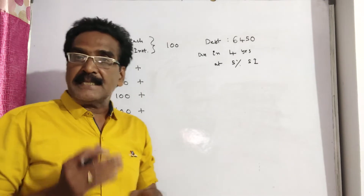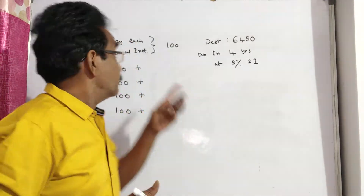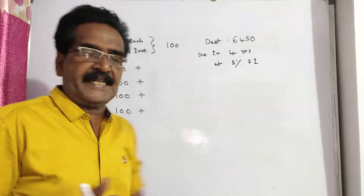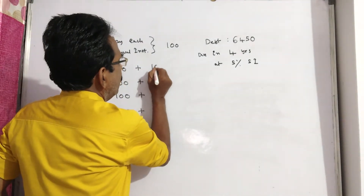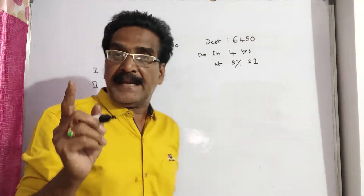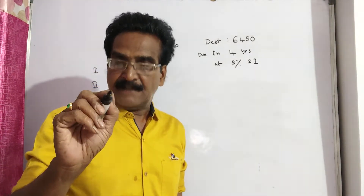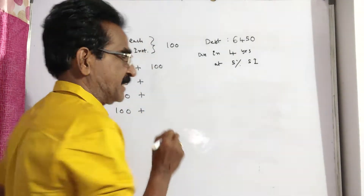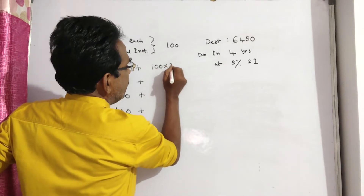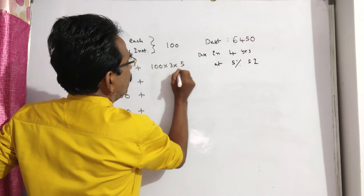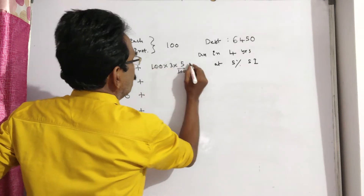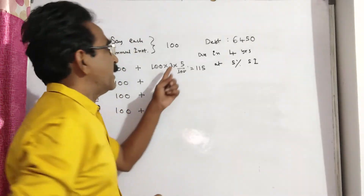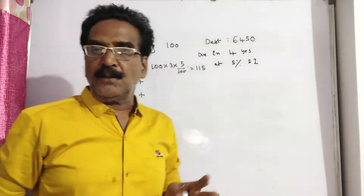You pay Rs. 100 at the end of the first year. This Rs. 100 will fetch interest for the remaining 3 years. Using P×T×R/100, that equals Rs. 15. So 100 plus 15 gives Rs. 115 — meaning you earn Rs. 15 interest over 3 years.